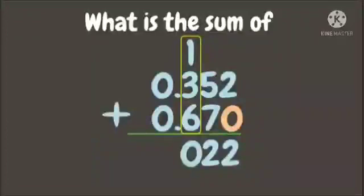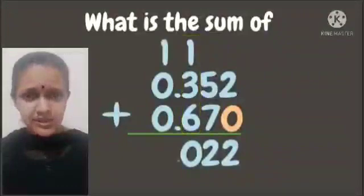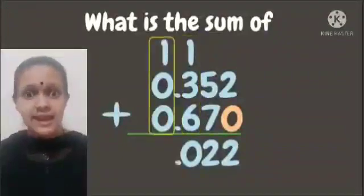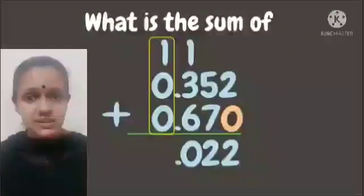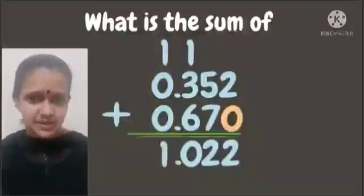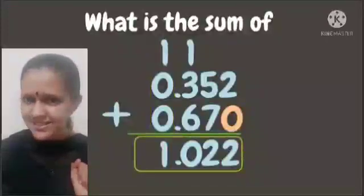Write 0, then carry 1 to the next place value. Put the decimal point aligned from above. Then 1 plus 0 plus 0 is 1. Our answer is 1.022.